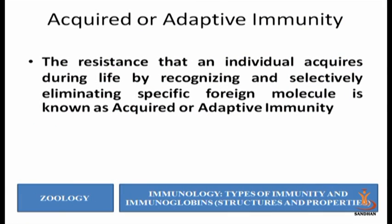The second type is innate immunity — that is, naturally our body is getting protected from microorganisms. Previously we are not vaccinated, previously we have not encountered that particular microorganism. Still there is a defense mechanism in the body, and that was the innate or natural immunity.